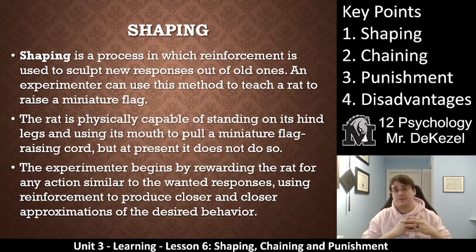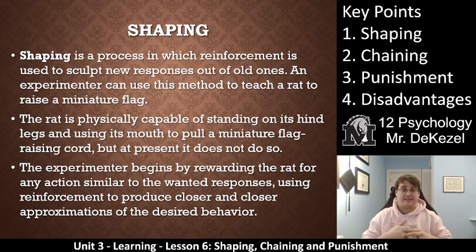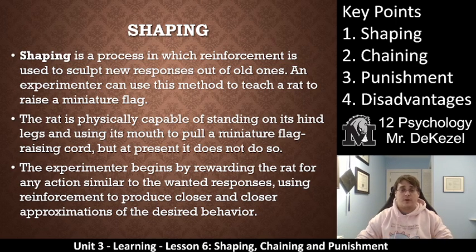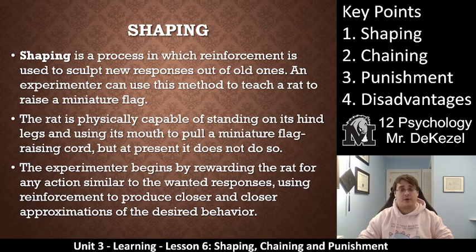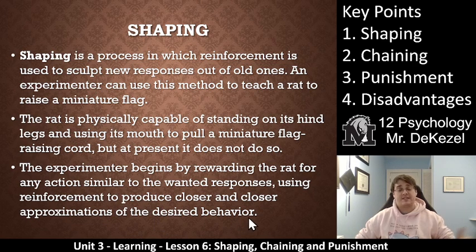This is how we teach people to do complex behaviors, complex moves — maybe choreograph a dance. This is shaping, as well as chaining. The experimenter begins by rewarding the rat for any action similar to the wanted response. We are using operant conditioning here to shape what we want, similar to the example of the rat pushing the bar, just more complex with pulling on a miniature flag cord. Rewarding any action similar to the wanted response, then using reinforcement to produce closer and closer approximations of the desired behavior.